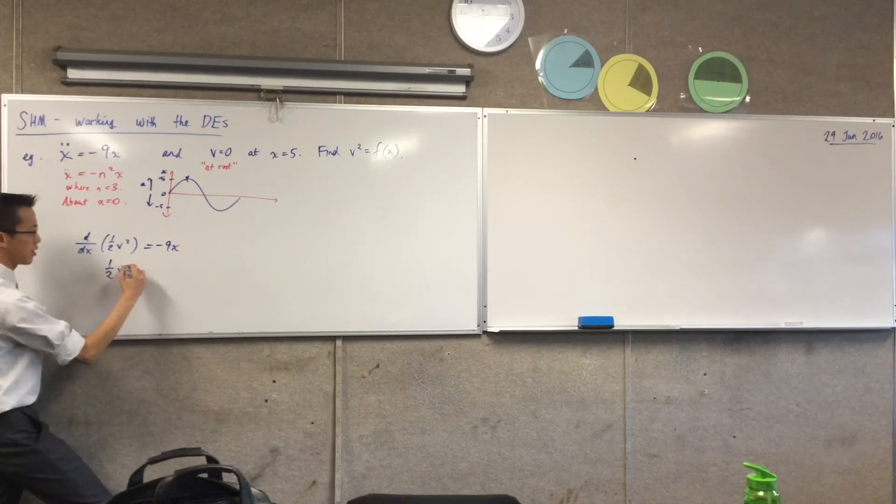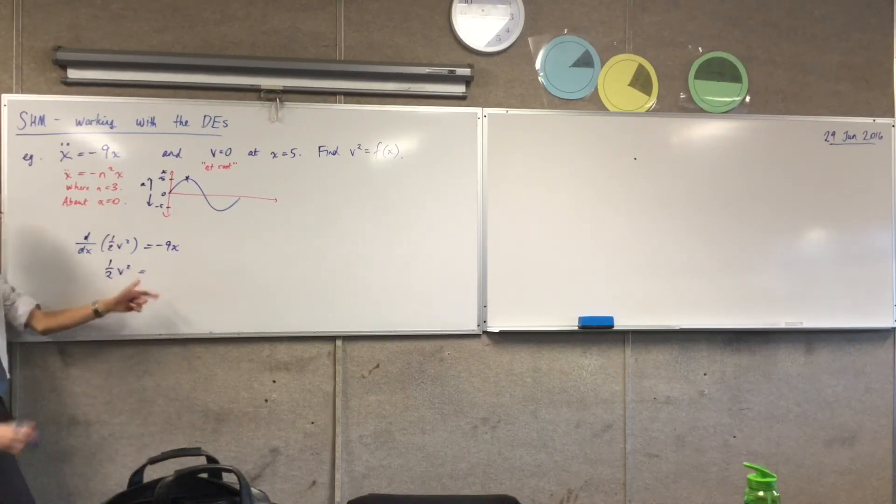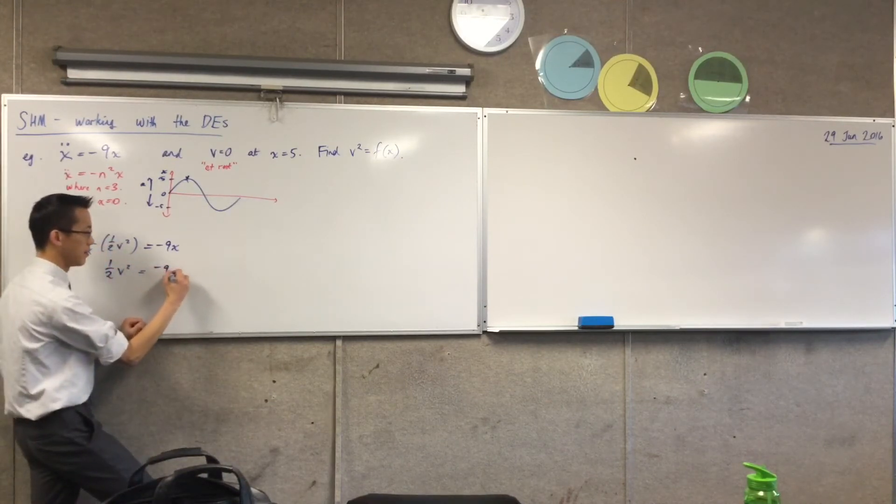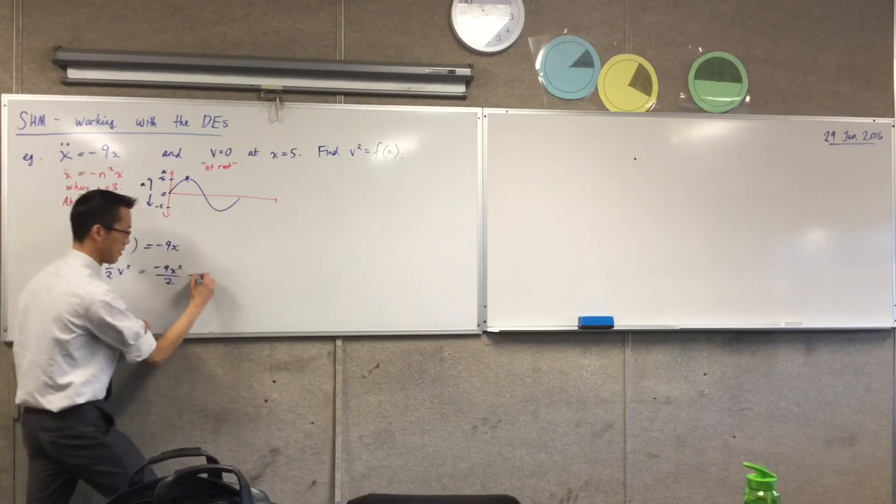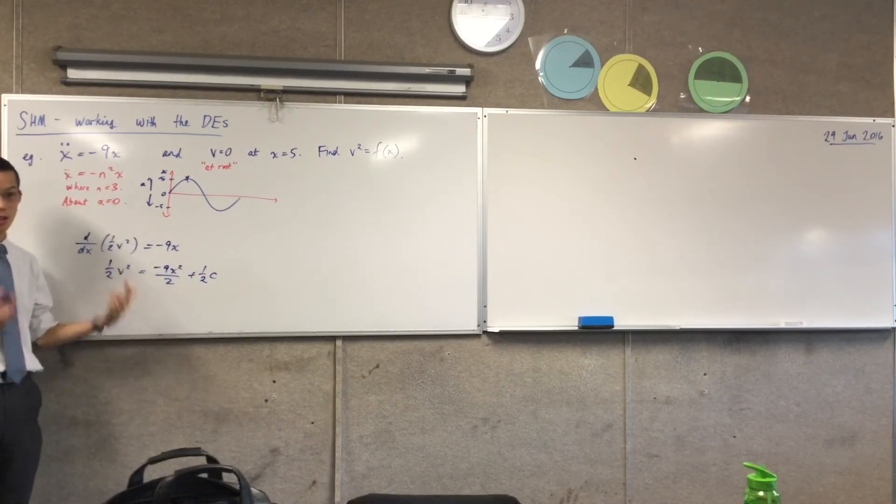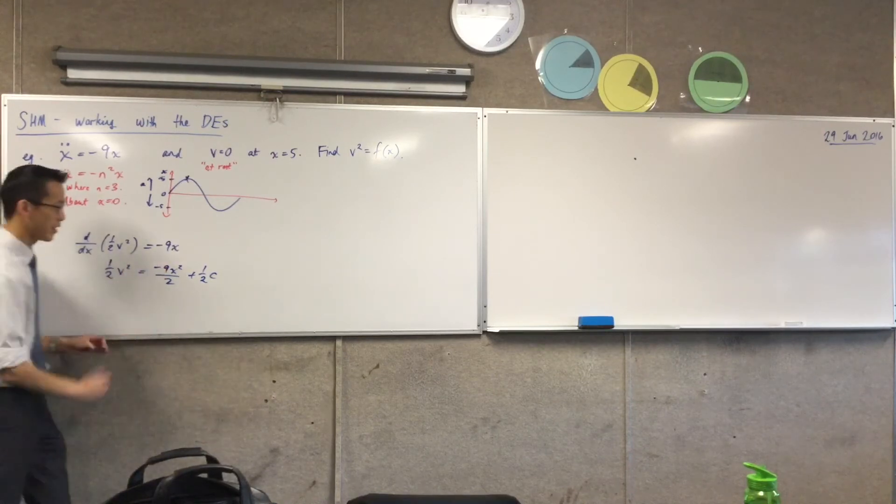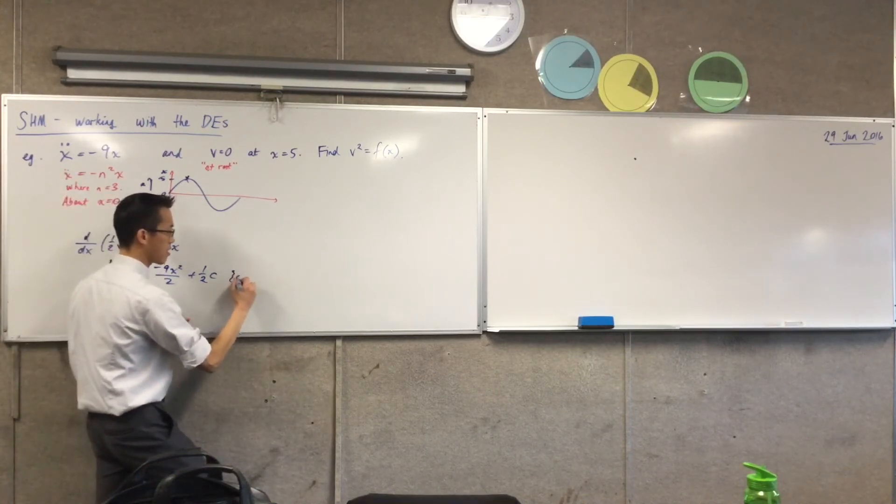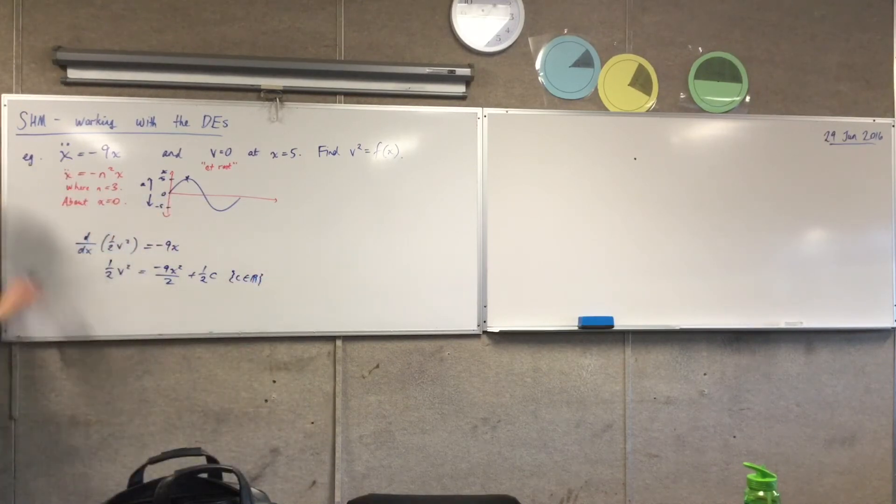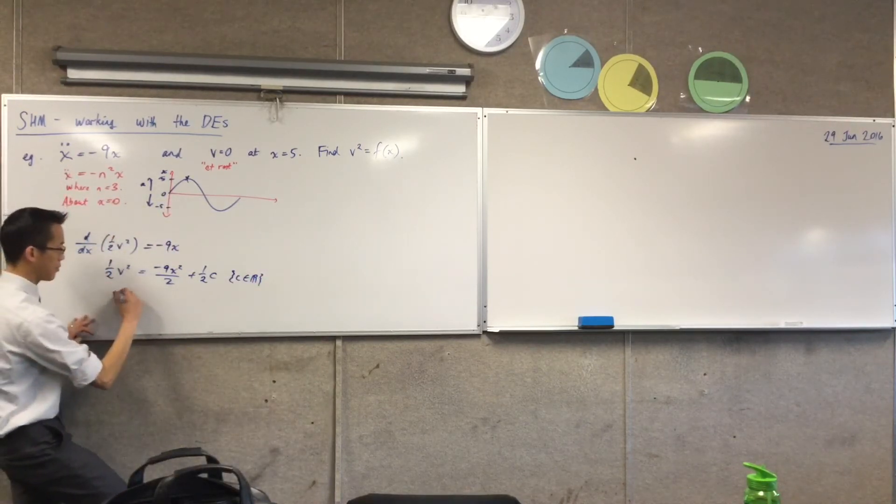On the left-hand side, you're going to get half v squared. Over on the right, what would you like me to write? Minus 9x squared over 2. As has been my convention, I'm just going to say half c, so that I end up with just a c once I double. So I'm going to say that guy is constant. It's a real number. And now I'm just going to multiply through. That gives me this.